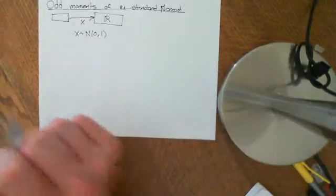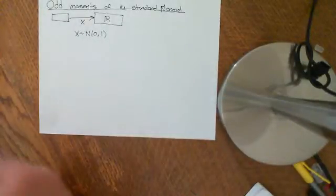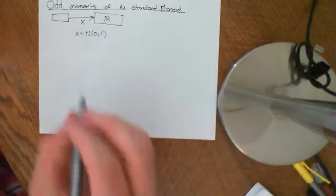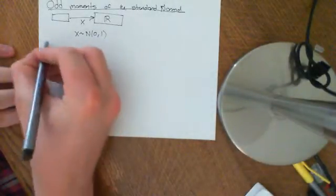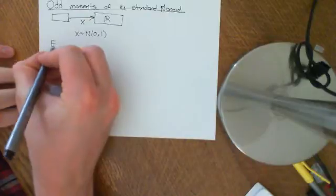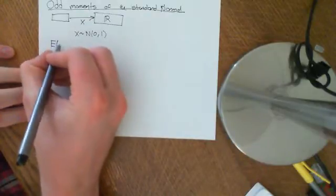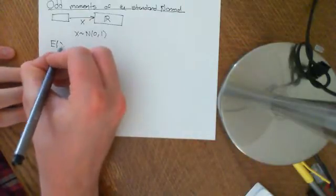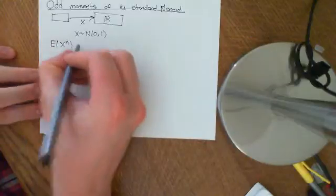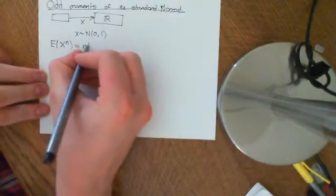So what do I mean by odd moments of the standard normal distribution? The odd moments are the expected value, well, the moments of a random variable are the expected value of x to the n. This is equal to the nth moment.